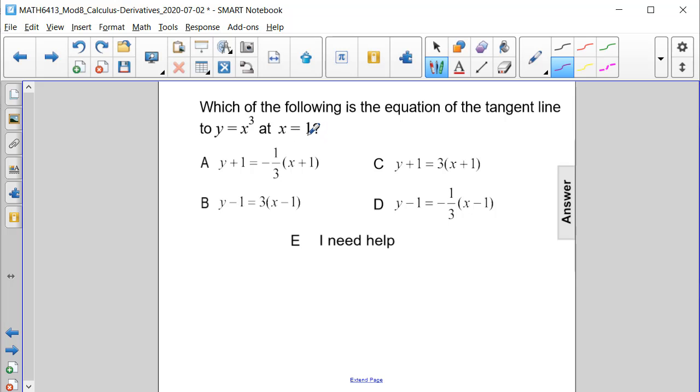So we need to substitute 1 in for x in our equation. So y is equal to 1 cubed, and 1 cubed is 1. Therefore, the point that y equals x cubed passes through is (1, 1).